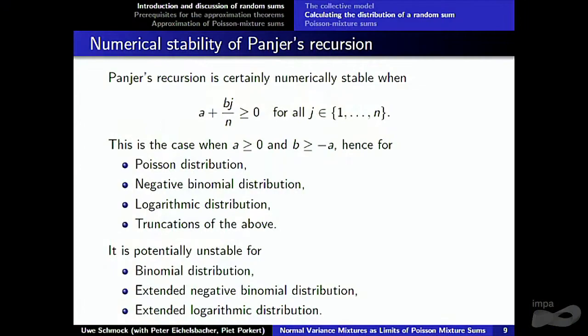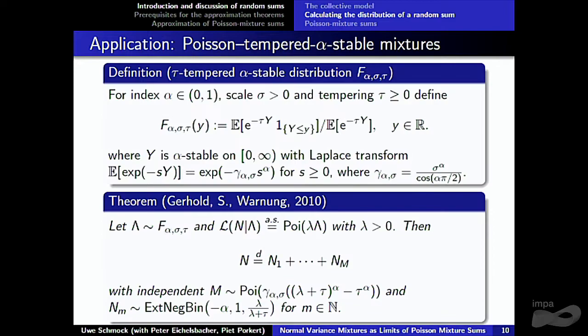You can also be concerned about numerical stability of the recursion. When the sum a + b·j/n_j stays non-negative for all possible values of j, you never have cancellation — you never subtract two positive numbers, which can be dangerous. That condition is satisfied when a is non-negative and b is larger than minus a. For the extended logarithmic and extended negative binomial distributions there can be problems, but there is a paper explaining how to work around the cancellation problem by investing more computer time.